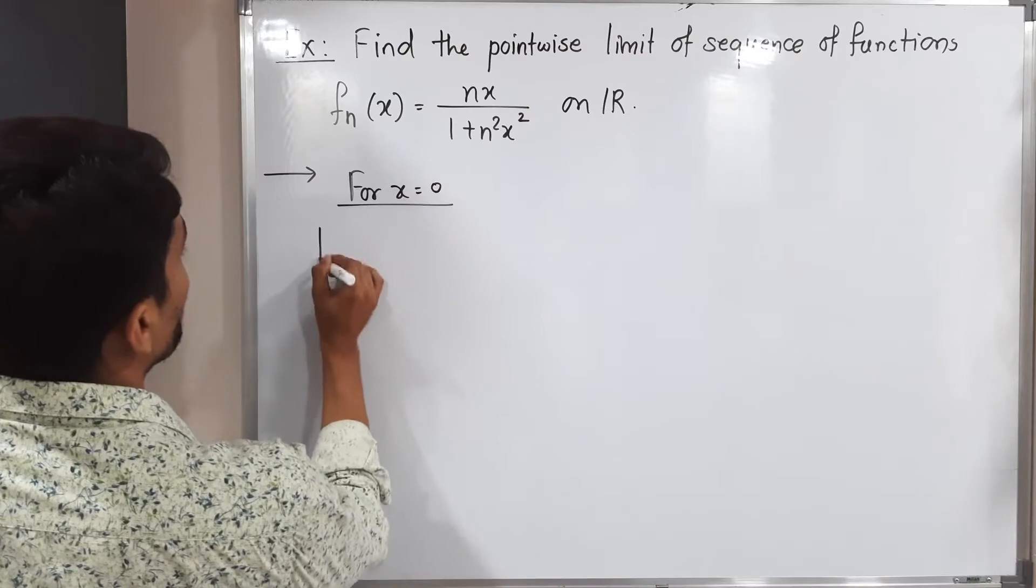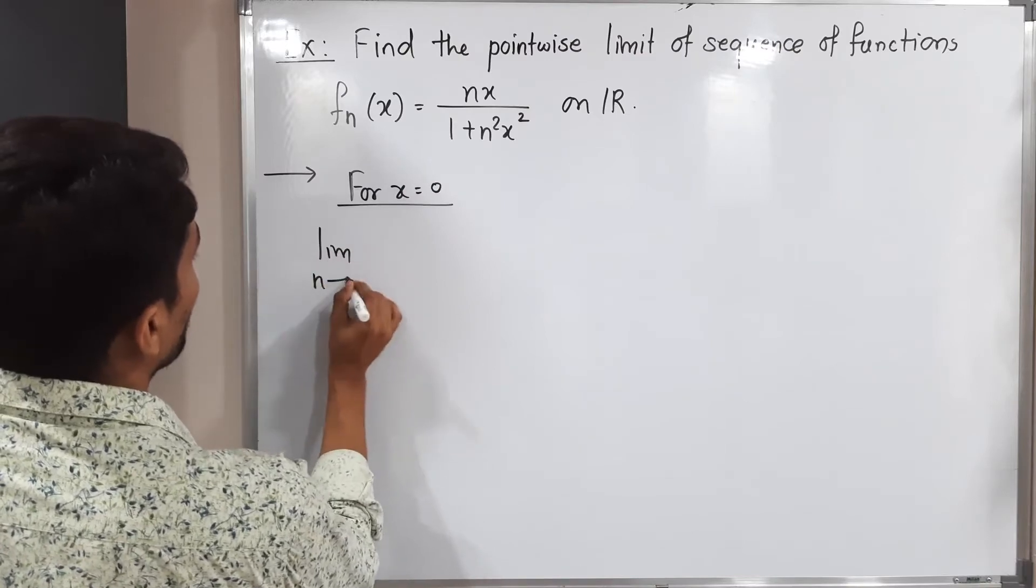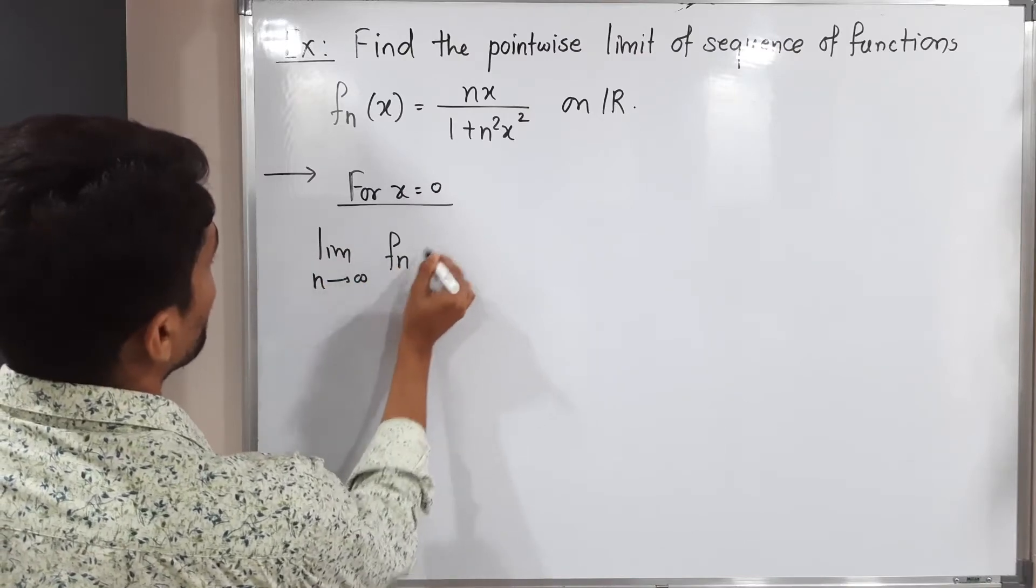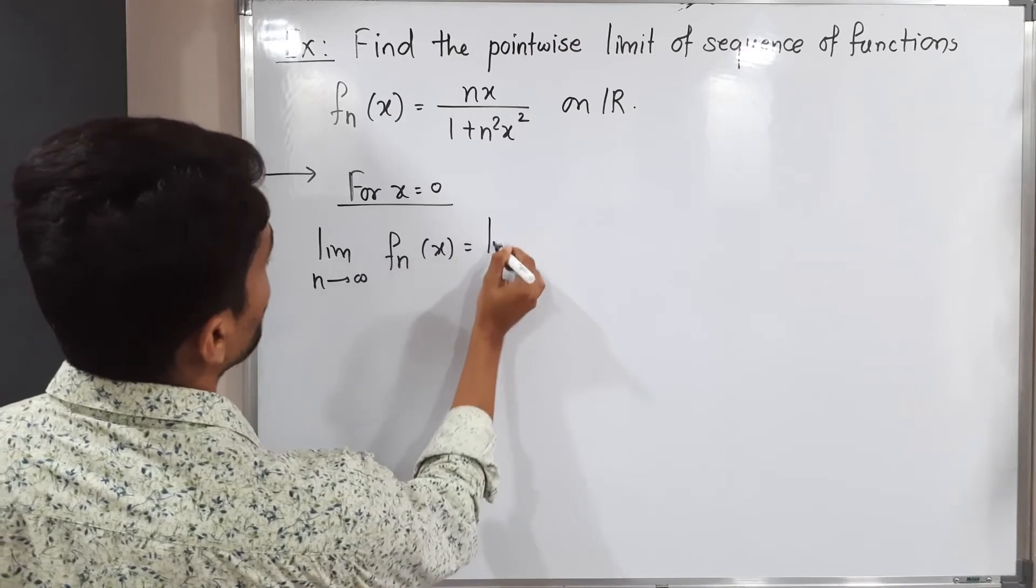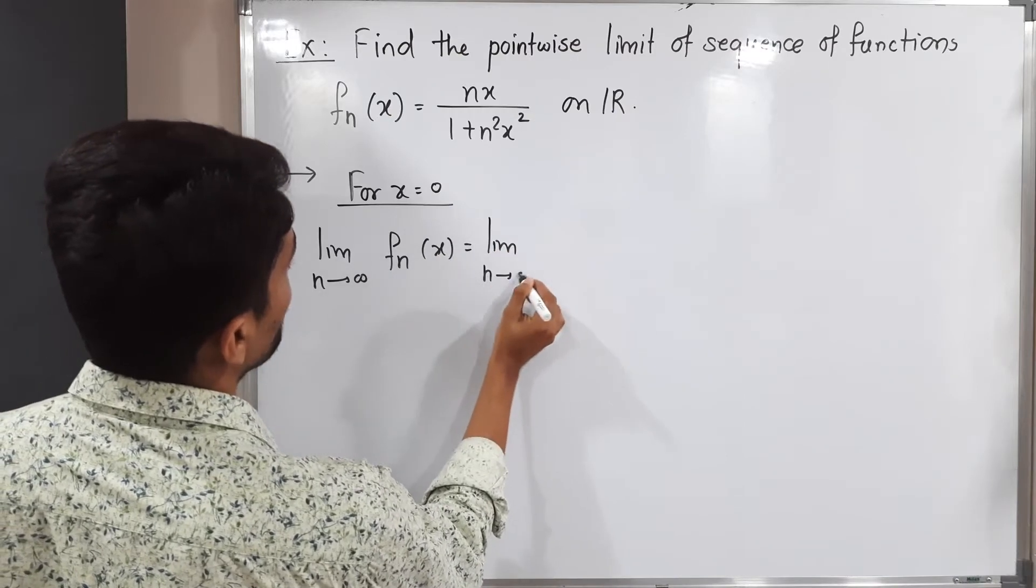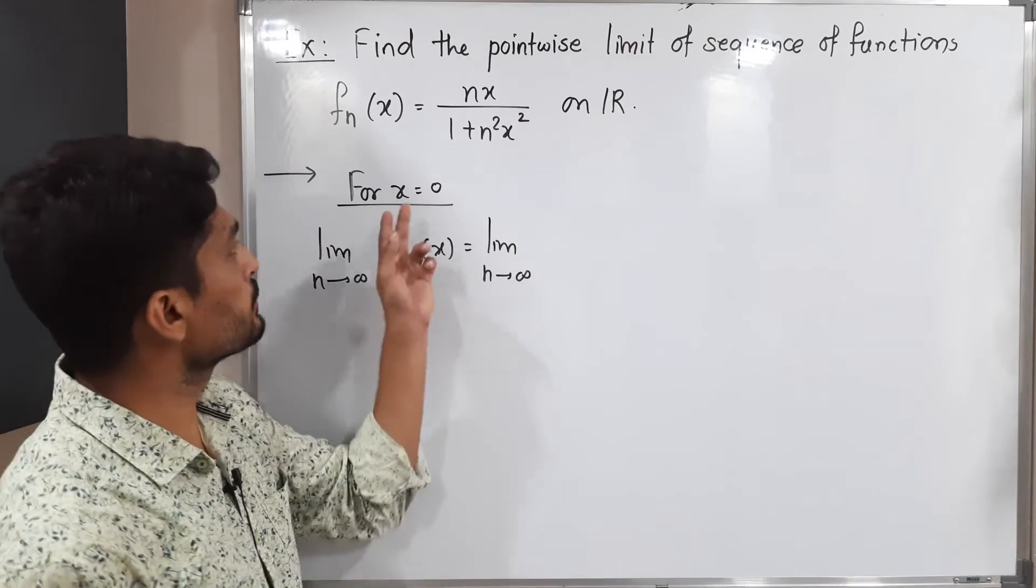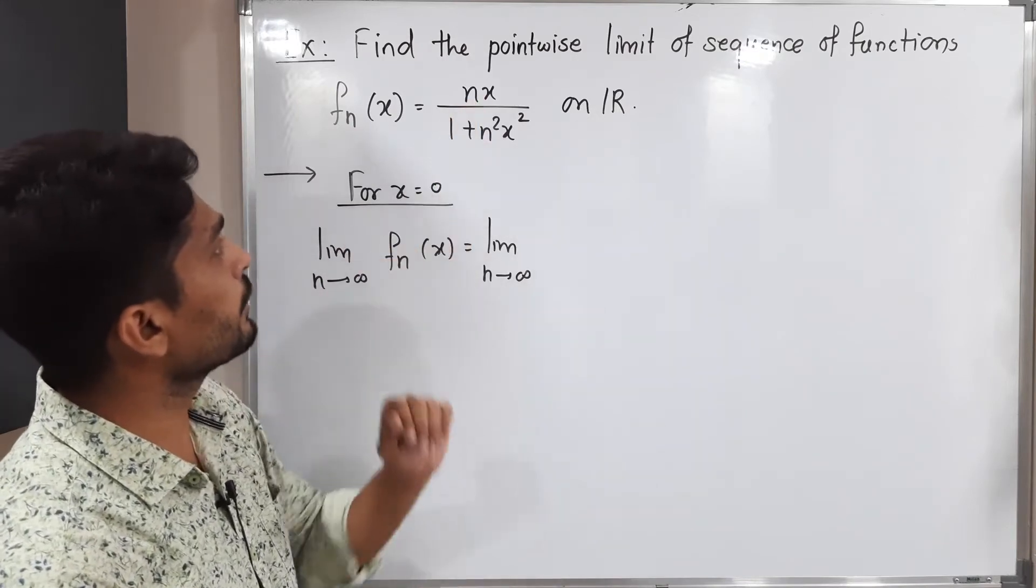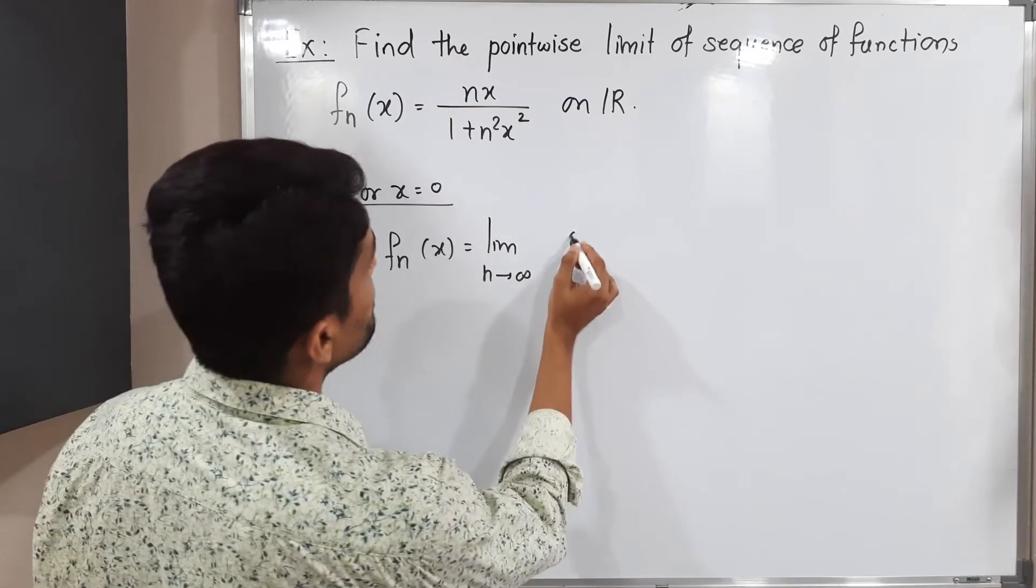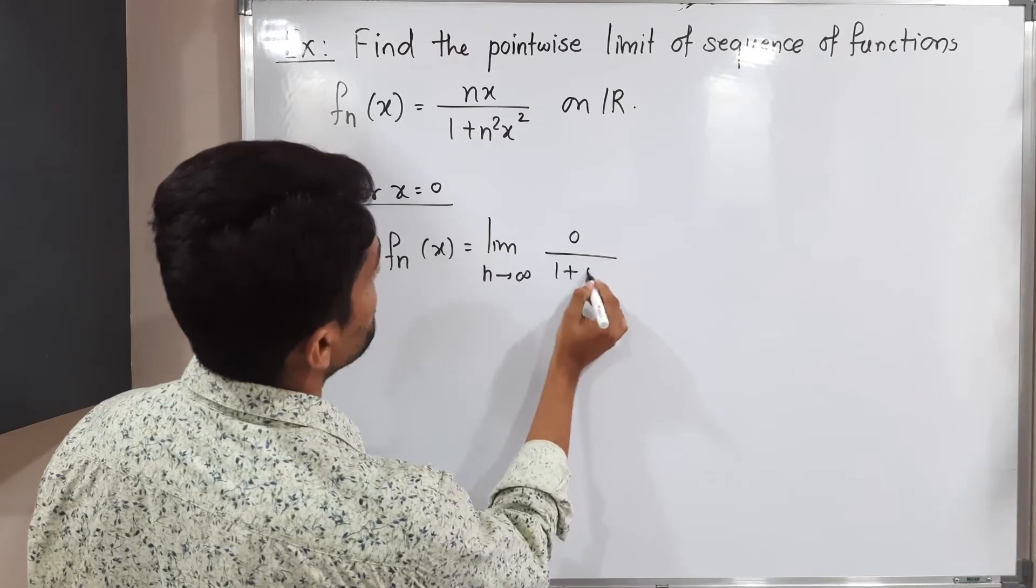For x=0, I'm going to find the limit. Limit as n tends to infinity of f_n(x) equals limit as n tends to infinity... f_n(x) is that one. Let us put x=0. So what will I have? Zero upon 1 plus 0.